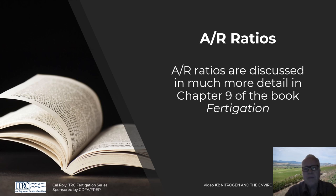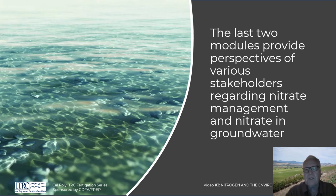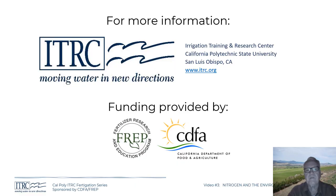The A:R ratios and related details are discussed in much more detail in chapter nine; we won't cover more of that in this video series. Along with chapter nine, there are two modules at the very end of the series examining perspectives of various stakeholders — those focused on environmental justice, those focused on the environment, farmers, and consultants — each with a different perspective on what's possible and what should be done. This concludes the third video in the series; we'll see you at the next video.